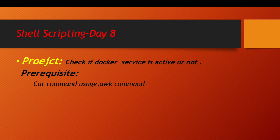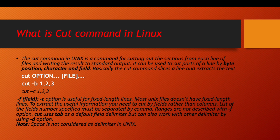Let us first understand what the cut command is and its use in Linux. The cut command in Unix is a command for cutting out sections from each line of a file and writing the result to standard output. It can be used to cut parts of a line by byte position, character, and field. Basically, the cut command slices a line and extracts the text.